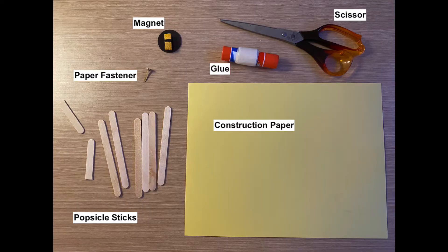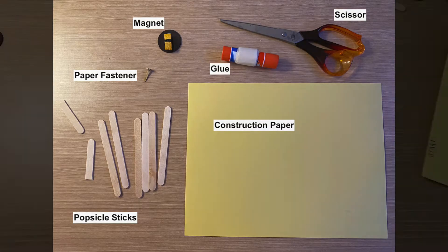Here's what you'll need: construction paper, scissors, glue, magnet, paper fastener, and some popsicle sticks.